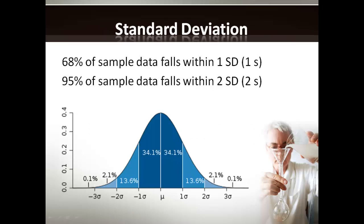Often in studies you'll come across the term one standard deviation or two standard deviations. What's being discussed is that 68% of the sample data falls within one standard deviation — so if you plot the data onto a graph, 68% of the data points will fall within one standard deviation. And 95% will fall within two standard deviations.